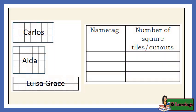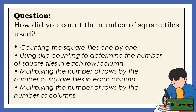Let us count the numbers of square tiles on the following nametags. Using skip counting to determine the number of square tiles in each row and column. Then multiplying the number of rows by the number of square tiles in each column, or multiplying the number of rows by the number of columns.